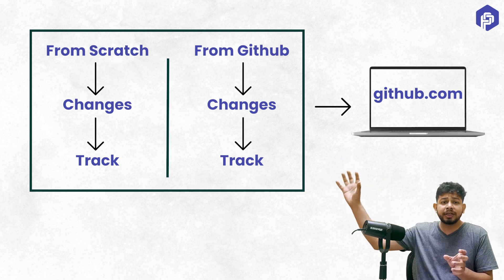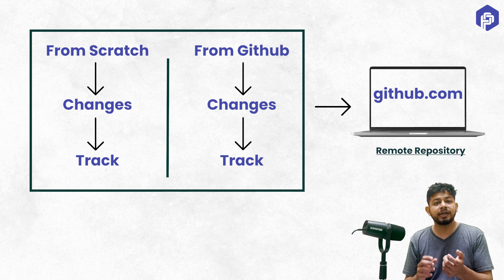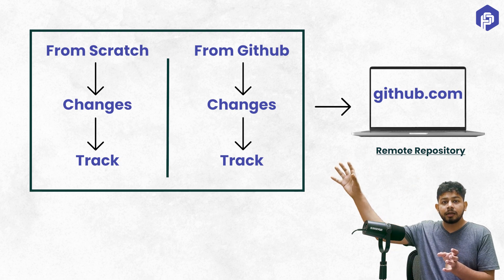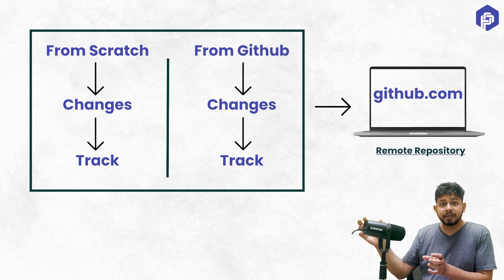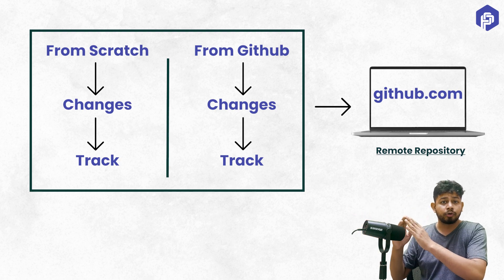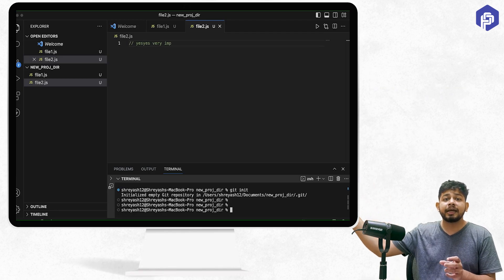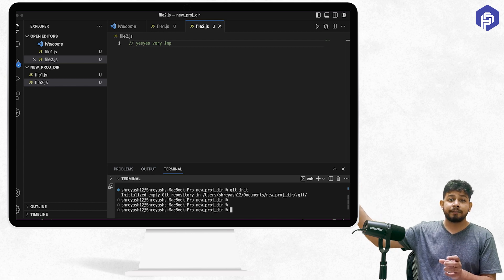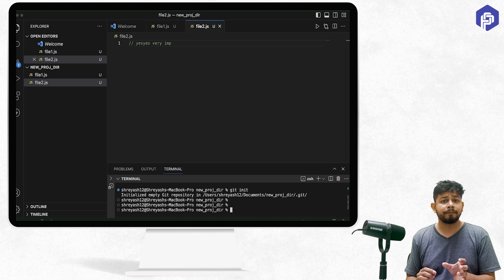That place on the internet is known as a remote. The project directory we have on the local system is known as the working directory, and on the internet on GitHub.com, the repository that we create is known as a remote. So I need to give my local system the address of my internet repository, which is the GitHub repository. Let's see how to do that.